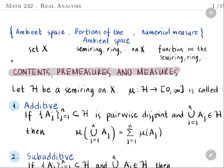Last time we introduced three components: the ambient space, which is a set containing the objects we are interested in; the portions of the ambient space, which will be a semi-ring, a ring, an algebra, or a sigma-algebra on the ambient space or on the set X. Now we start with the discussion of the numerical measure.